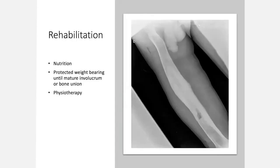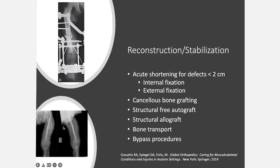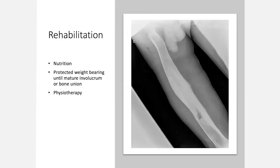In terms of rehabilitation, nutrition is incredibly important. Consider protective weight-bearing until there is a mature involucrum or bone union. This five-year-old boy with chronic osteomyelitis sustained a pathologic fracture — it's really difficult when you have a broken and infected bone. Long-standing osteomyelitis can cross into the joint, so you may also be dealing with the sequelae of septic arthritis, causing stiffness in the joints above and below the bone of interest. It is very helpful for patients to work with physical therapy.